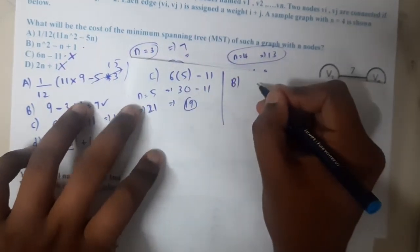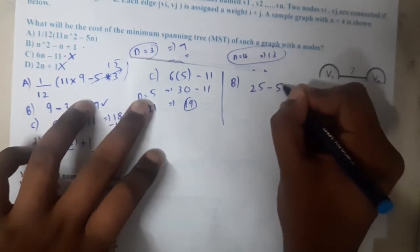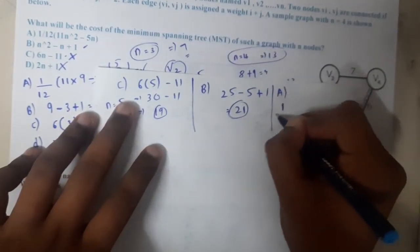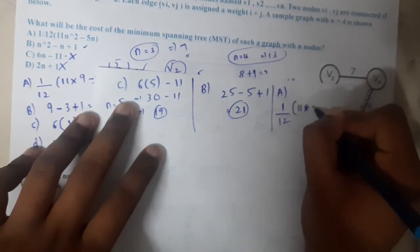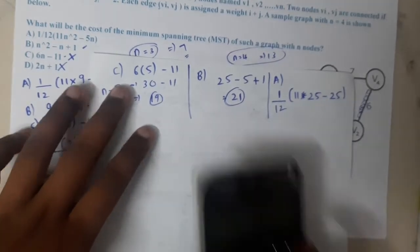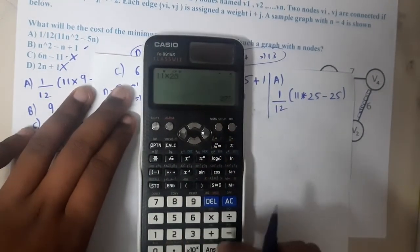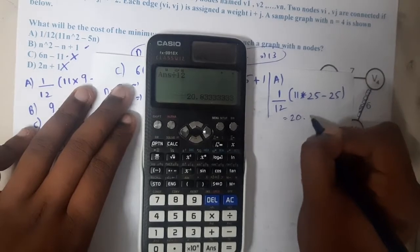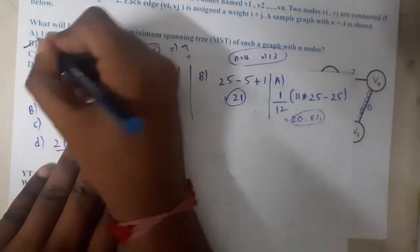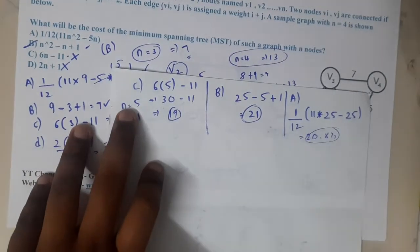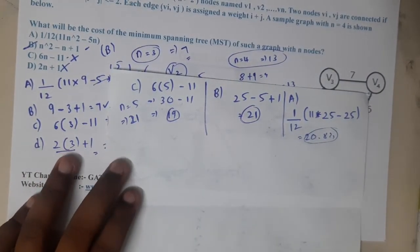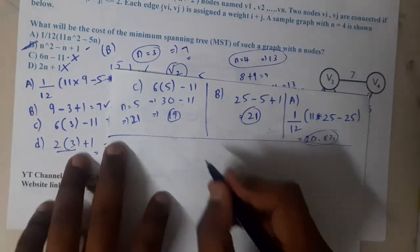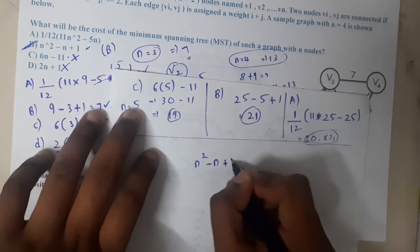Option B: n² - n + 1 = 25 - 5 + 1 = 21 — this matches. Option A: (11×25 - 5×5)/12 = (275 - 25)/12 = 250/12 ≈ 20.833 — this is a decimal and does not match. So option A is eliminated. The correct answer is option B: n² - n + 1.